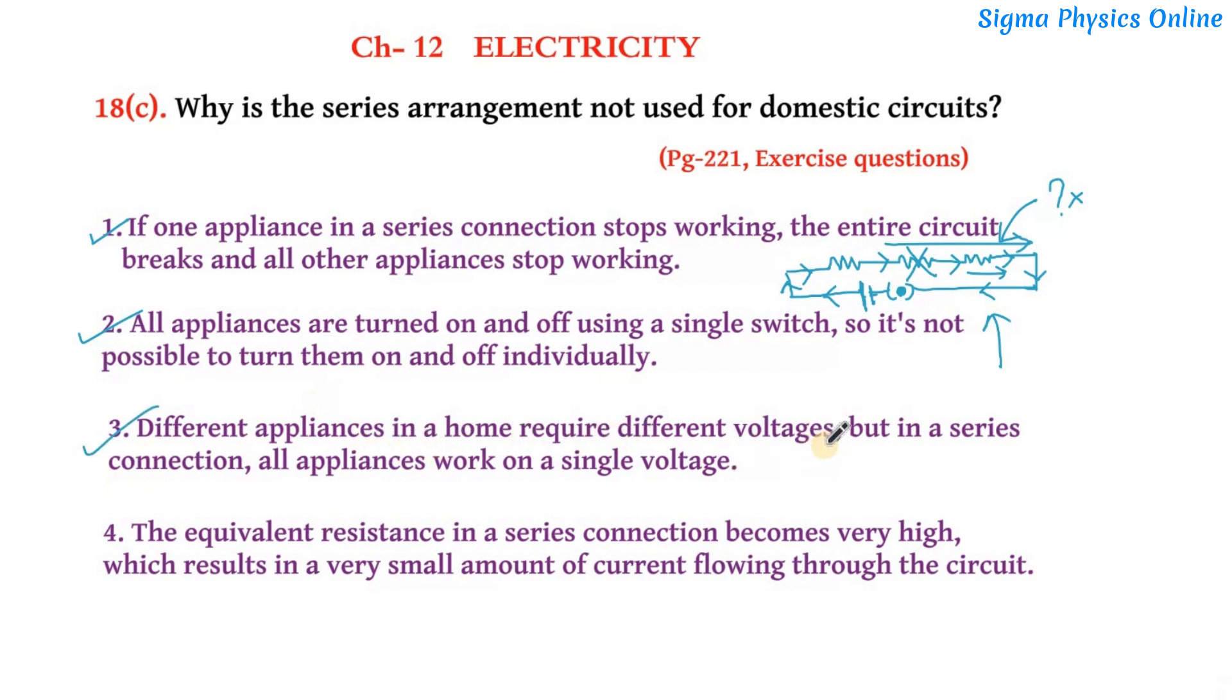The third one is: different appliances in a home require different voltages, but in a series connection all appliances work on a single voltage. As you can see, in the case of a series arrangement all the appliances are working on the same supply voltage. In our house, different appliances require different voltages. Like a fridge will require a different amount of voltage, TV will work at a separate voltage, the washing machine needs to work at a separate voltage. But in the case of series arrangement, all appliances are working on a single voltage, so it is not possible to connect all of them in series.